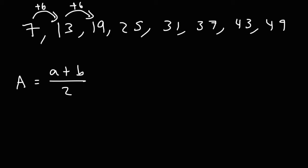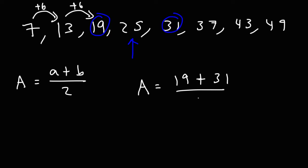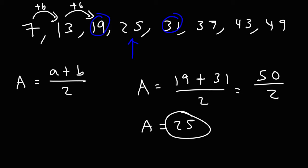If we want to find the arithmetic mean of 19 and 31, it's simply the middle number in the arithmetic sequence. We add 19 and 31, then divide by 2: 19 plus 31 is 50, and 50 divided by 2 is 25. And as you can see, we get the middle number in the sequence.